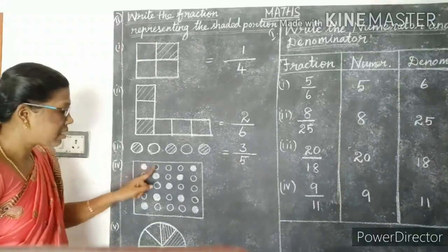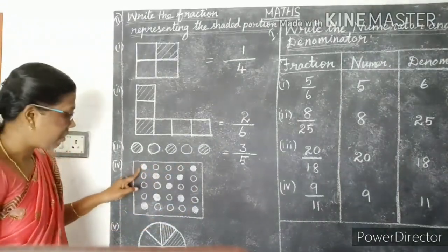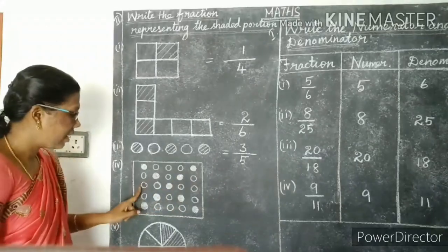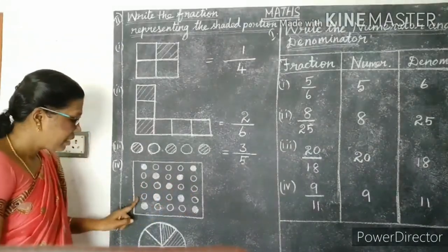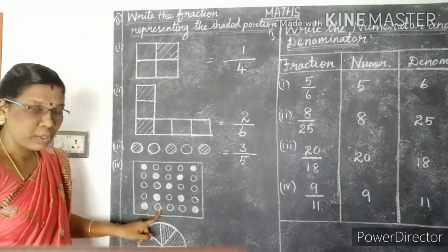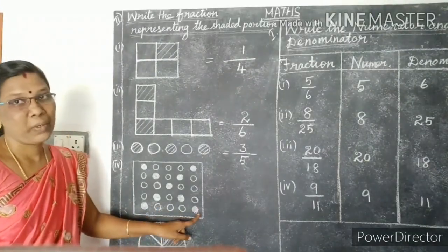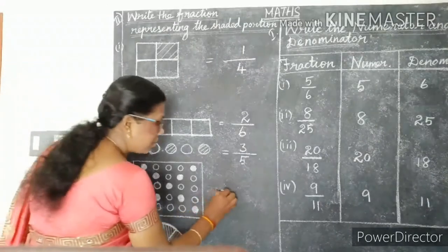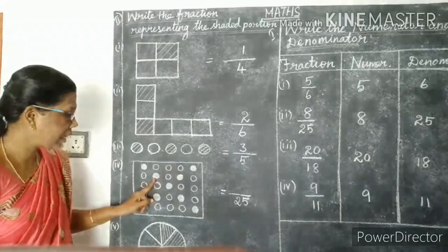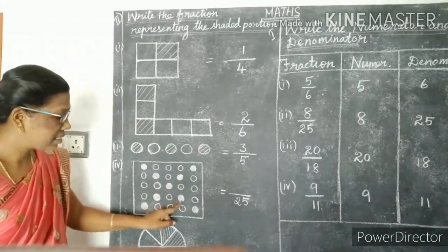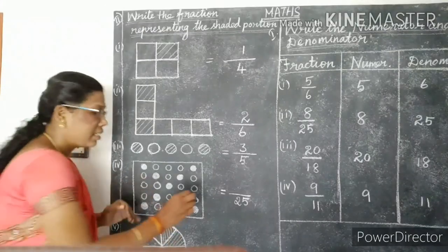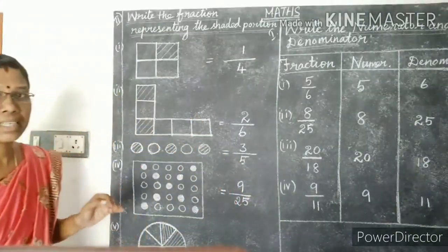See the next one. Count the total: one through twenty-five — so total twenty-five. Write twenty-five as denominator. How many are shaded? One through nine — nine circles only shaded here. Write nine as numerator. So the fraction is nine by twenty-five.